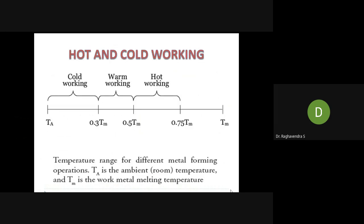There are three types of working in plastic or sheet metal processes, forging, or extrusion: cold working, warm working, and hot working. Cold working is metal forming performed at ambient temperature — that is, at room temperature.